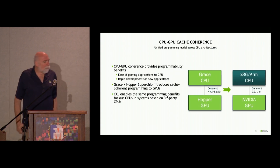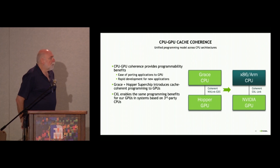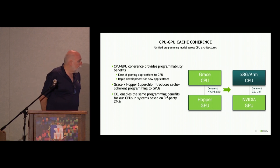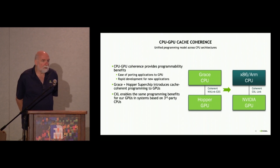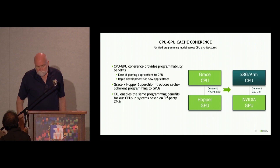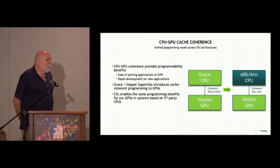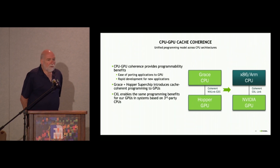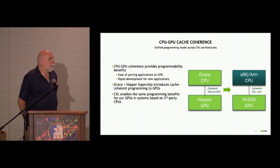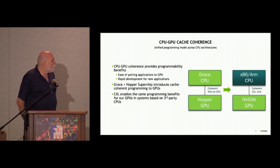From an NVIDIA product standpoint, we're supporting both models, but we're also moving towards the right model. Today we have a Grace CPU and a Hopper GPU — that's the high-performance chip-to-chip interconnect using our version of NVLink — and we're also moving to supporting a CXL coherent link using an industry-standard CPU and NVIDIA GPU.